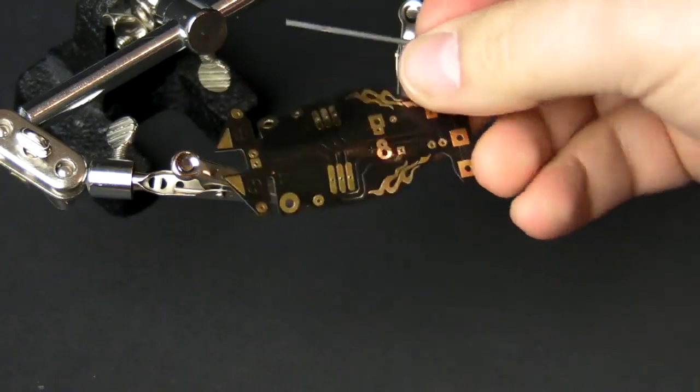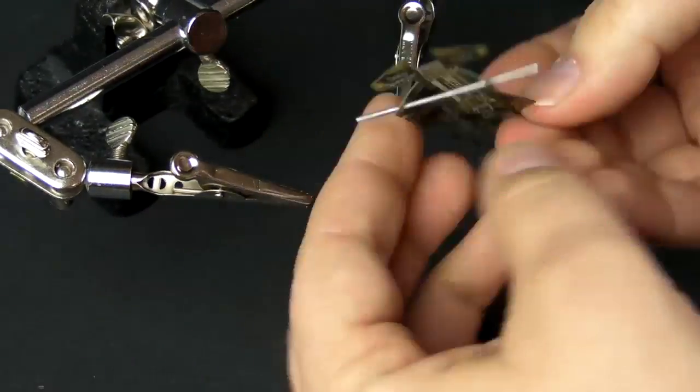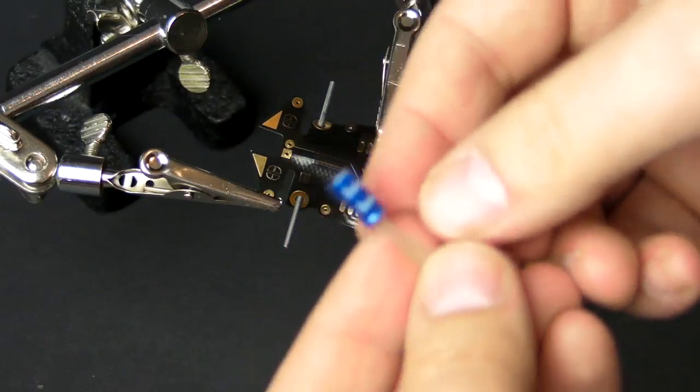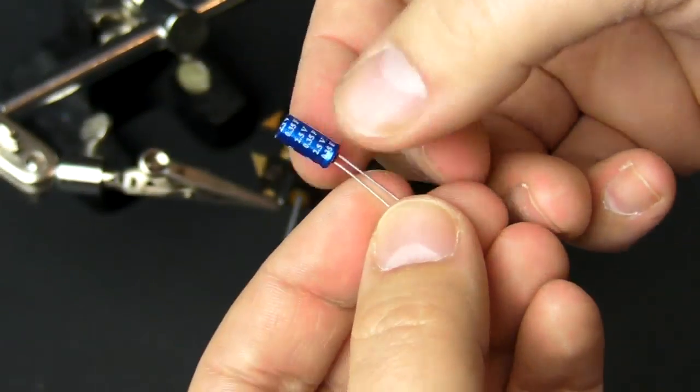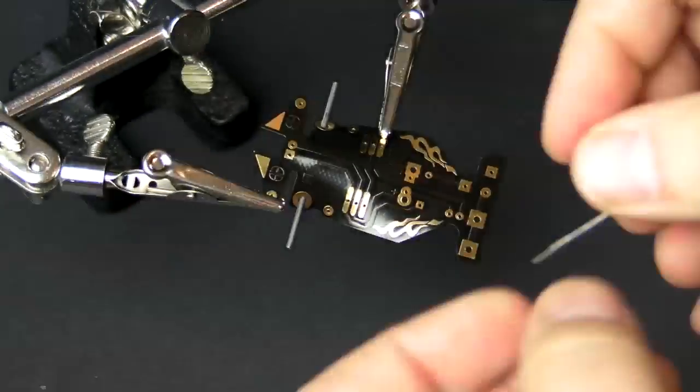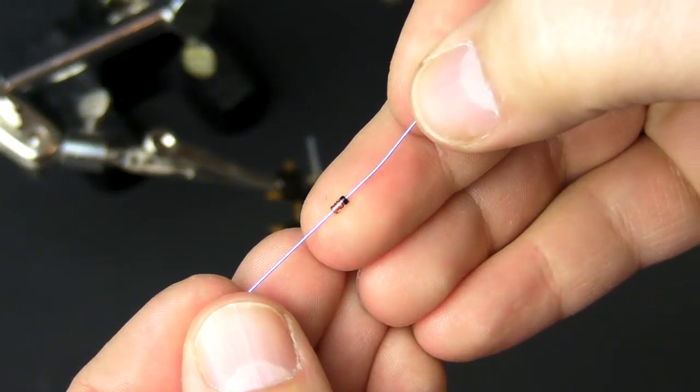Step one is to add the axle. Then the next step is to take this capacitor and bend it at a 90 degree angle. Next is the diode.